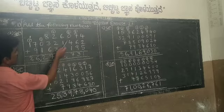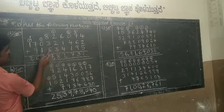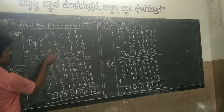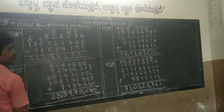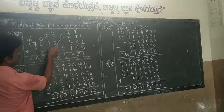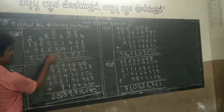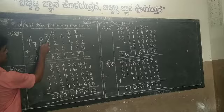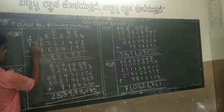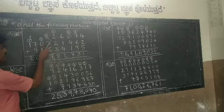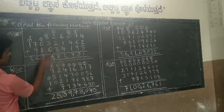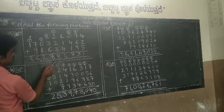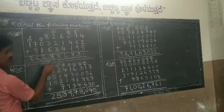In the ten-thousands place, the digits are 1, 2, 2, and 3 (carry). Add: 1 plus 2 is 3, 3 plus 2 is 5, 5 plus 3 is 8. It is a single-digit number, so write 8 with no carry. Next, in the lakhs place, the digits are 8, 3, and 6. Add: 8 plus 3 is 11, 11 plus 6 is 17. Write 7 down and carry 1.